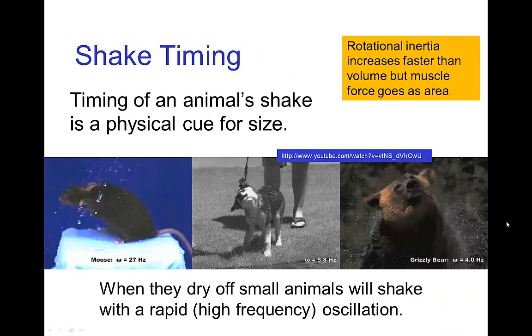Yet another example of scaling is the timing of an animal's shaking. When an animal is shaking itself to dry itself, a small animal like a mouse will shake at about 27 hertz, which means 27 oscillations per second. Something like a dog, only about 6 oscillations per second, and a large animal like a grizzly bear will shake about 4 oscillations per second. Yet again another physical timing that gives you an indication of scale and size.